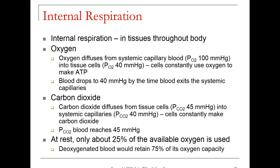The next type is internal respiration. Internal respiration is the exchange of respiratory gases between the systemic capillaries and your tissues — really going from the systemic capillaries to the interstitial fluid around your tissue cells. Oxygen will diffuse from the systemic capillary blood, where it has a partial pressure of 100 millimeters of mercury, into the tissue cells. An average tissue cell will have a partial pressure of oxygen of 40 millimeters of mercury.